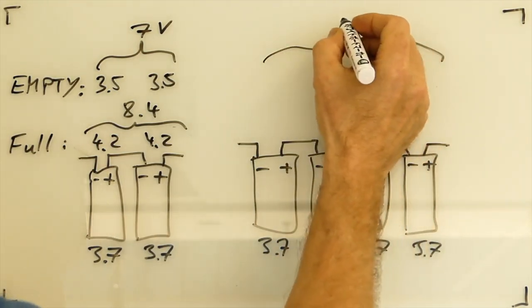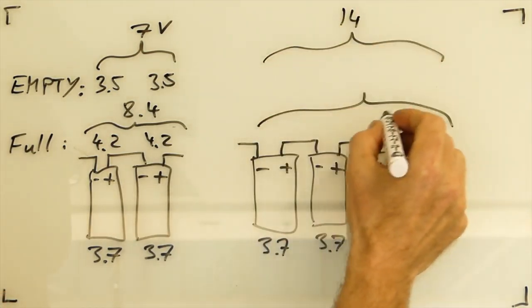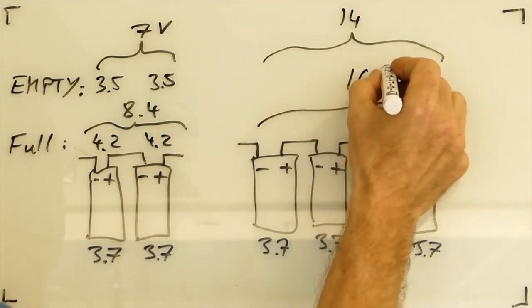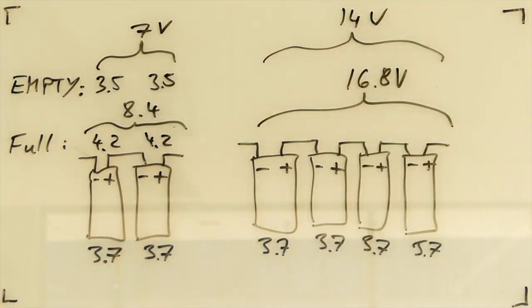Correspondingly, the four cell batteries are empty at 14 volts and full at 16.8 volts. Our chargers usually get these batteries 90% full, so it might not be exactly 8.4 volts. It might be 8 to 8.4 volts and 16 volts to 16.8 volts can be considered as full.